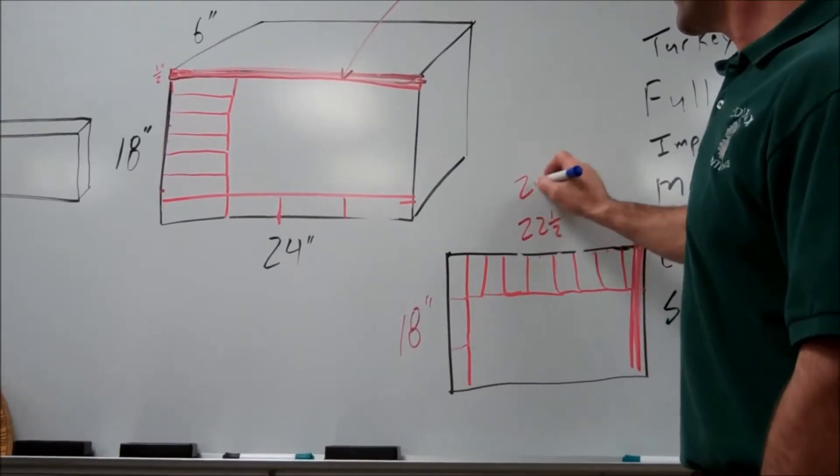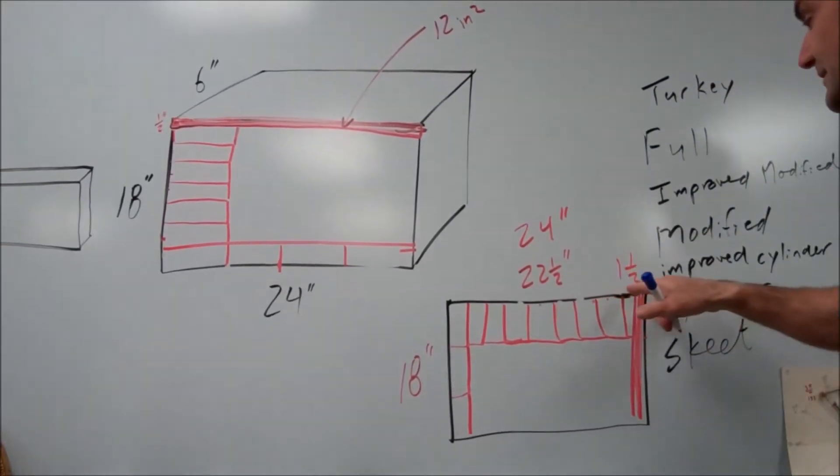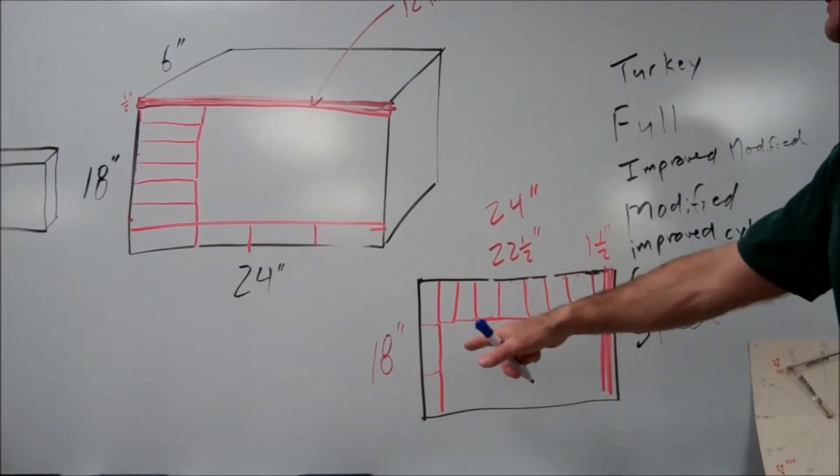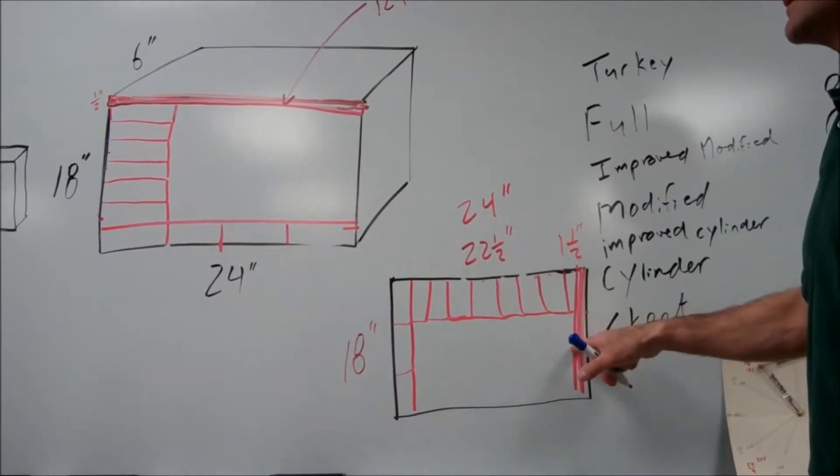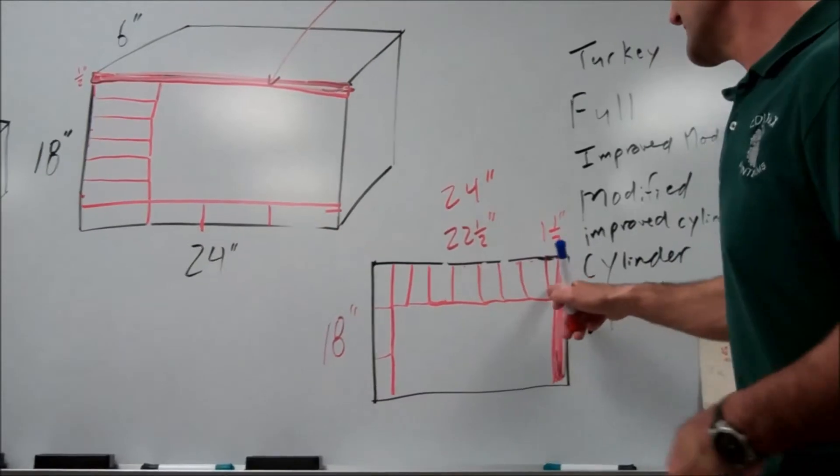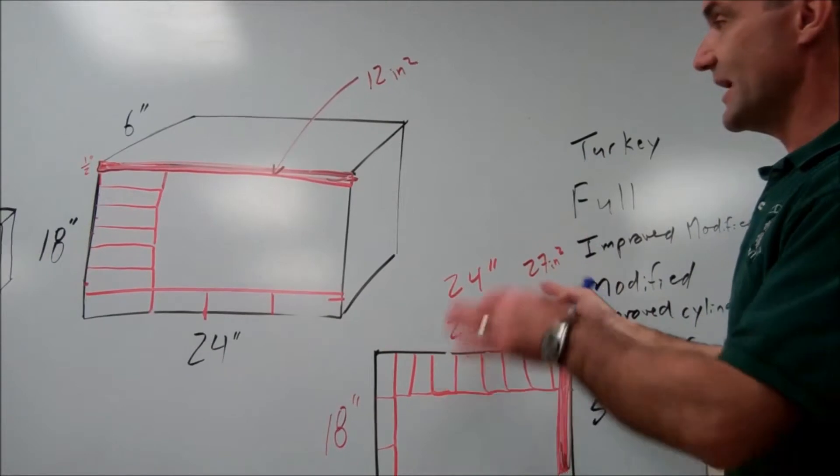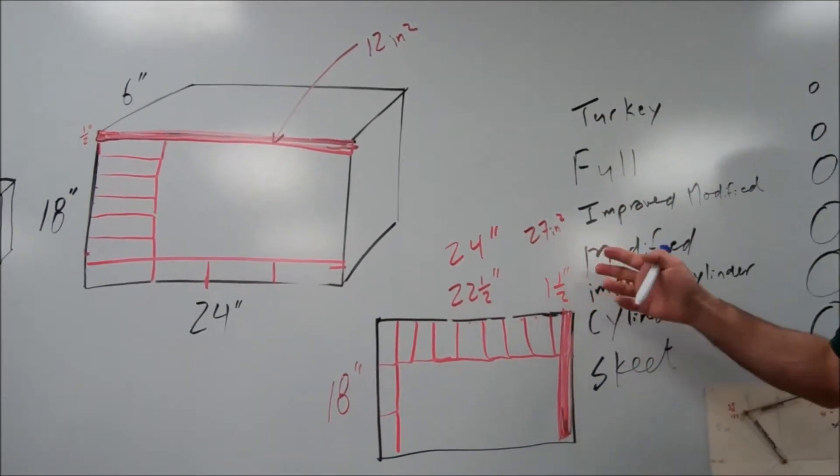22 and a half of the 24 inches means I'm wasting one and a half inches. One and a half times 18, how many inches am I wasting in this scenario here, Caleb? So in this scenario here, I'm wasting 27 square inches, and the volume is going to be the same amount of height I come up.